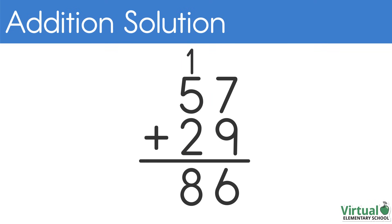Write 8 in the tens place. The answer we found is 86. 57 plus 29 equals 86.